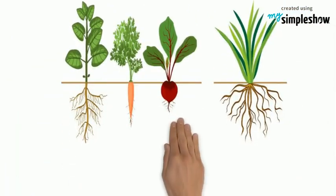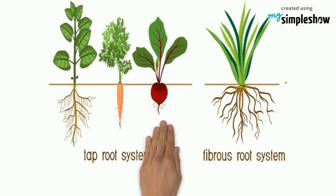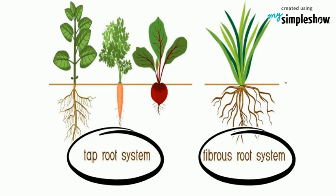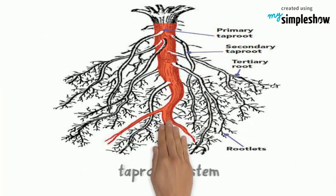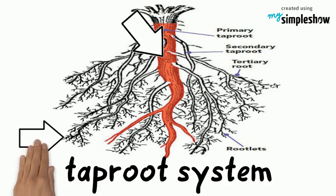All roots have almost similar functions but they vary in structure. Plants have two main types of root systems. First is the taproot system. It has a main root that grows down vertically, from which many smaller roots grow. It goes deep into the soil.